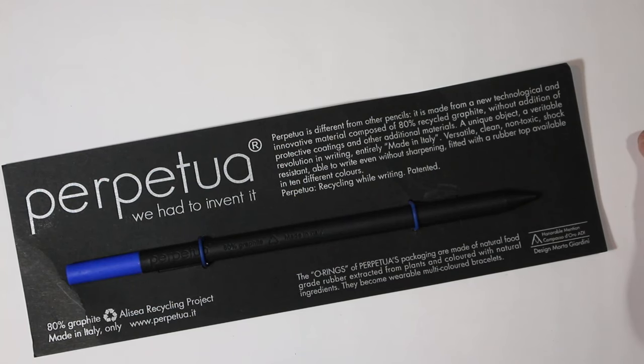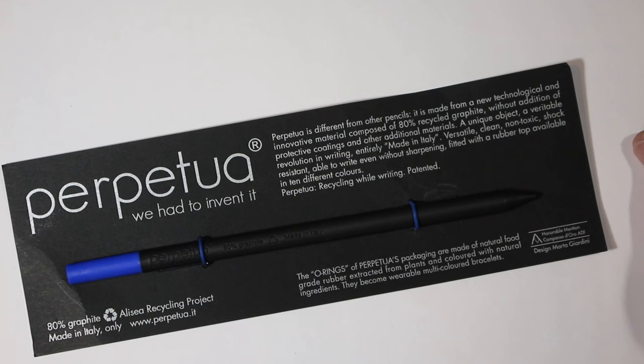They are sold individually, but you're buying a pencil. It's really about more than just the pencil. Let's get into this. I'll simply read what it says: Perpetua is different from other pencils. It's made from a new technological and innovative material composed of 80 percent recycled graphite without addition of protective coatings and other additional materials. A unique object, a veritable revolution in writing entirely made in Italy, versatile, clean, non-toxic, shock resistant, able to write even without sharpening, fitted with a rubber top, available in 10 different colors. Perpetua recycling while writing, patented.